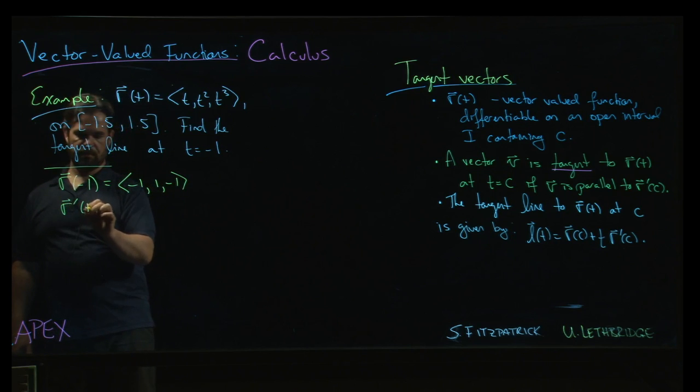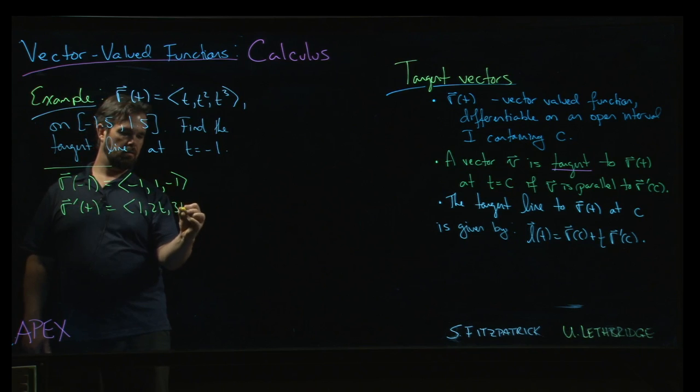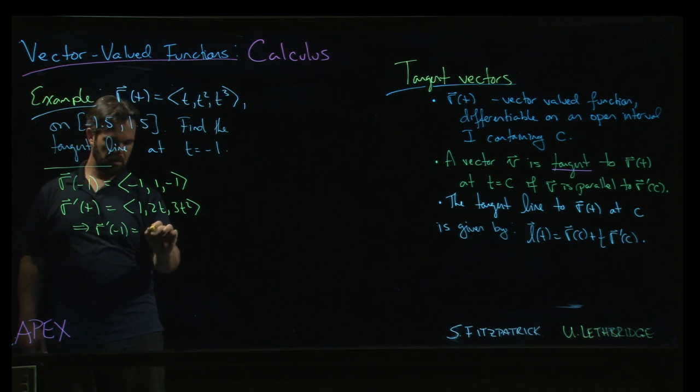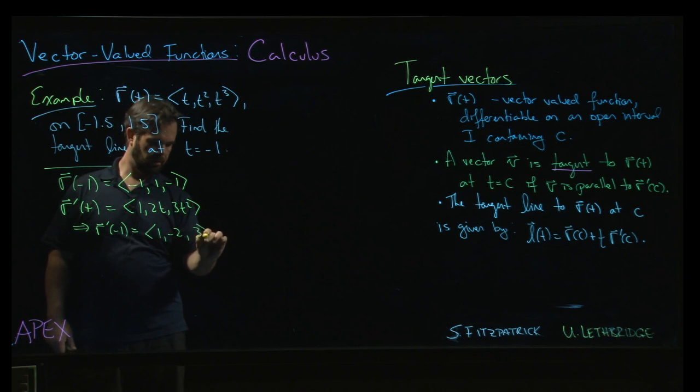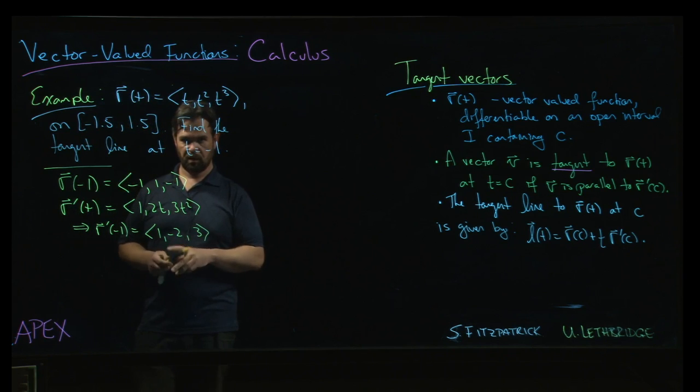Now we're going to calculate r prime of t, which is going to be 1, 2t, 3t squared. And so that means that r prime at minus 1 will be 1, minus 2, 3, right? Squaring that minus 1 gives me plus 1.